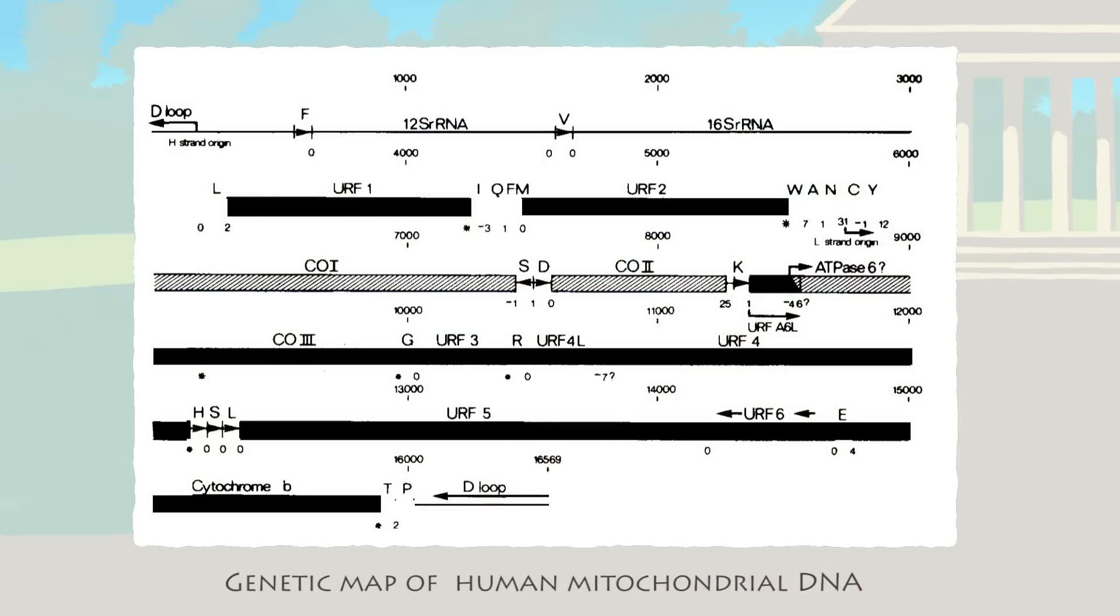Sanger and colleagues used this technique to sequence human mitochondrial DNA, the first human genes to be sequenced. For this invaluable development, Sanger was awarded his second Nobel Prize in 1980.